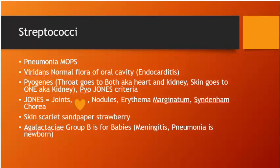Strep pneumoniae: meningitis, otitis, pneumonia. Strep viridans: normal oral flora, causes endocarditis. Strep pyogenes: throat goes to both heart and kidney; skin goes to kidney. Jones criteria major findings: painful joints, carditis, nodules, erythema marginatum, Sydenham's chorea. Scarlet fever from Strep pyogenes: sandpaper rash, strawberry tongue (also seen in Kawasaki). Strep agalactiae (Group B): causes meningitis and pneumonia in newborns.